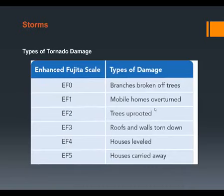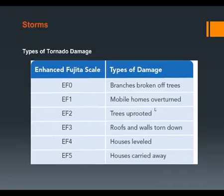Tornado damage is measured on the EF scale, with six levels. An EF0 involves branches broken off trees. An EF1, mobile homes can be overturned. An EF2, trees are uprooted. An EF3, roofs and walls are torn down. An EF4, houses are leveled. An EF5, houses are carried away — essentially the Wizard of Oz scenario where houses are picked up and moved long distances.